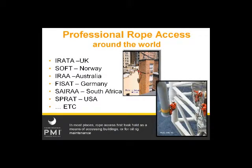Rope access occurs around the world and is accepted to varying degrees in different parts of the world. Understanding where rope access came from is part of understanding where we're going and why we do things the way we do. There are several rope access organizations around the world other than SPRAT — you're probably familiar with IRATA in the UK. There's SOFT in Norway, IRAA in Australia, FSAT in Germany, SARA in South Africa, and several others. Many of these organizations do certifications for technicians just as SPRAT does, but most began specifically to address a type of work being done in that part of the world.